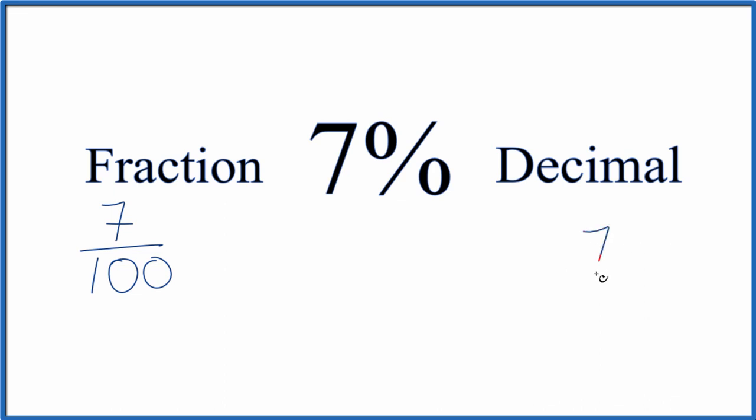One way to think about it is we have 7 here. So we're dividing by 100. We need to move the decimal point one, two places. There's our decimal point.